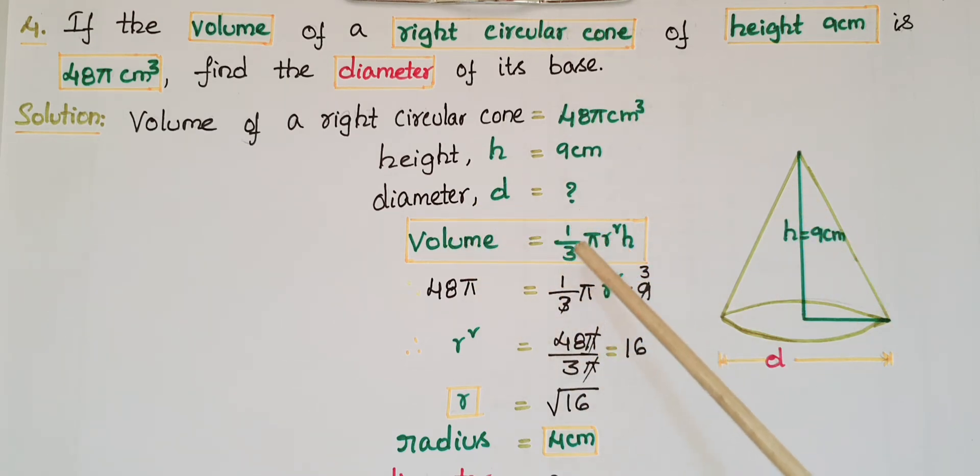Volume of a cone, we know, is one-third πr²h. The given volume is 48π, so 48π equals one-third πr² times 9. Three times nine is nine, so we simplify.